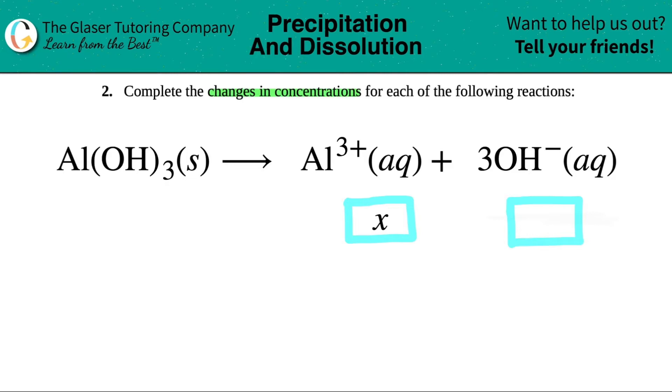The coefficients are the big numbers in the front. But for aluminum 3+, I don't see a number. Remember, any time you don't see a number, how many do we really have? We just have one of them.